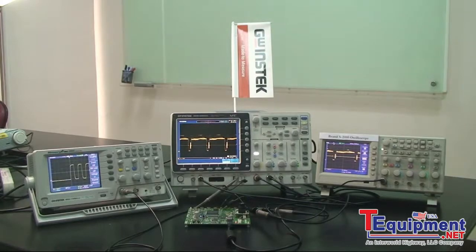GW INSTEK GDS-2008 oscilloscope has a waveform update rate of 80,000 waveforms per second, which is a tremendous technological breakthrough for oscilloscopes with equivalent function on the market.